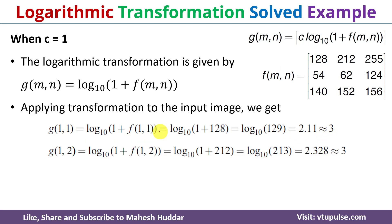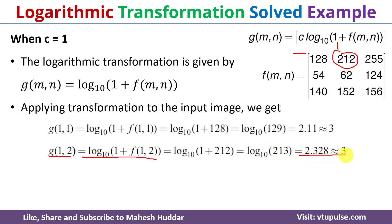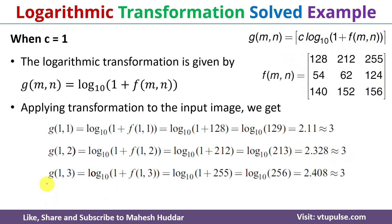Similarly for the first row second column, g is equal to log of 1 plus f to the base 10. The value of f is 212. Once you put that value it becomes log of 1 plus 212 to the base 10, which is 213. So log of 213 to the base 10 is equal to 2.328, which rounds to 3. Similarly for the first row third column, f is equal to 255. So log of 1 plus 255 to the base 10 equals log of 256 to the base 10, which is equal to 2.408, which rounds to 3.